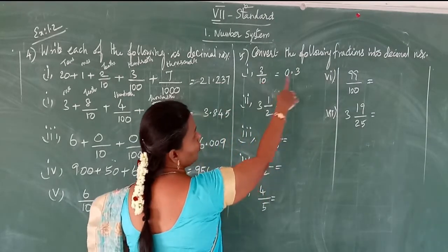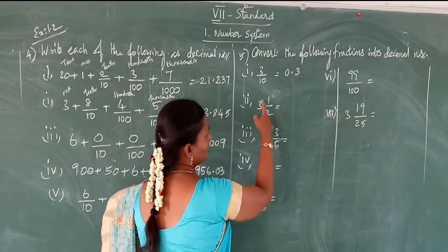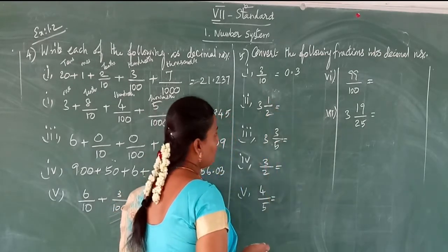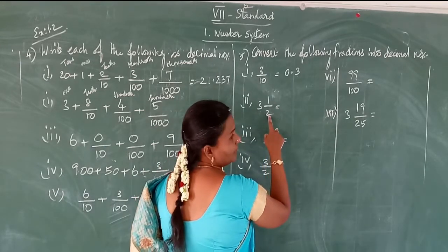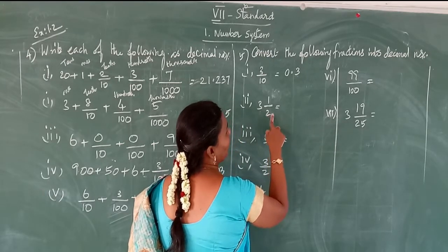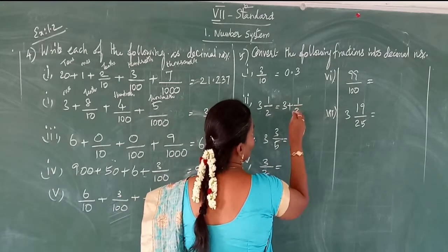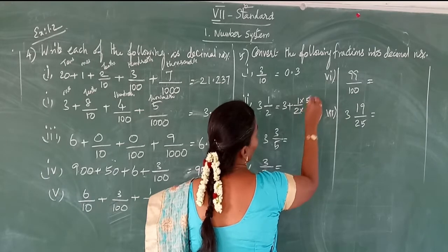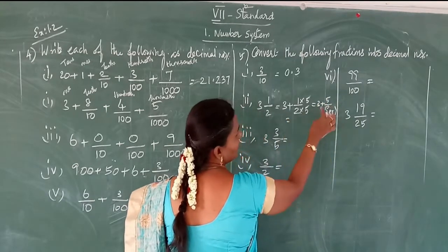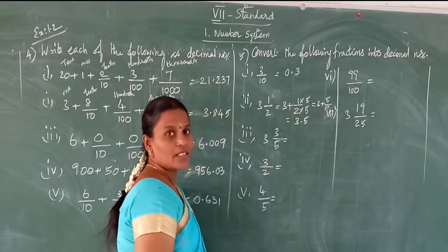Next: 3 and 1/2. The whole part is 3. For 1/2, multiply numerator and denominator by 5 — we get 5 by 10. So the decimal part is 5 in the tenths place. This gives 3.5.